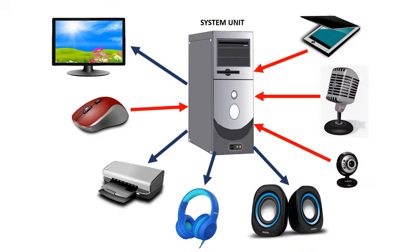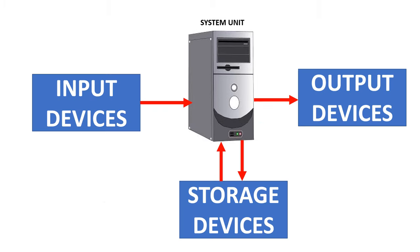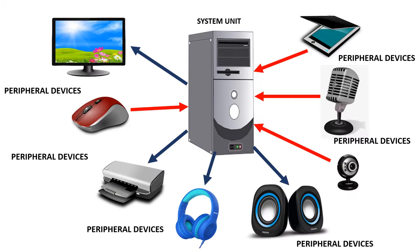External hardware are hardware found outside the system unit, and they are connected to the system unit. They include input devices, output devices, and storage devices. External hardware components are called peripherals.